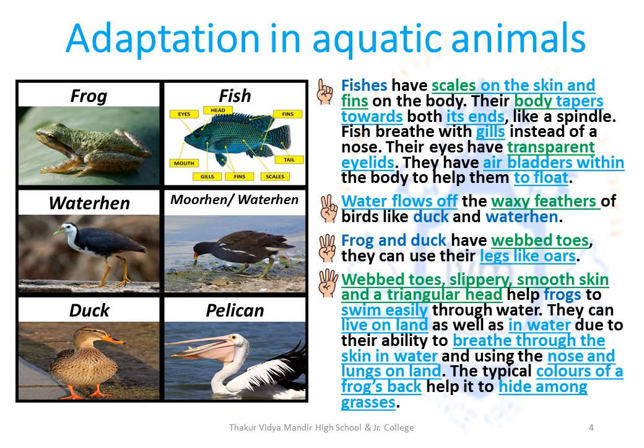Birds like duck and water hen have webbed toes and waxy feathers. Webbed toes act like oars of a boat which helps them swim easily in the water, and the waxy feathers make sure that water does not get absorbed by their feathers, keeping them dry. Frogs also have webbed toes, along with slippery smooth skin and a triangular head, which helps them swim easily. Frogs are amphibians — animals that can live on land as well as in water — due to their ability to breathe through their skin in water and through their nose and lungs on land.